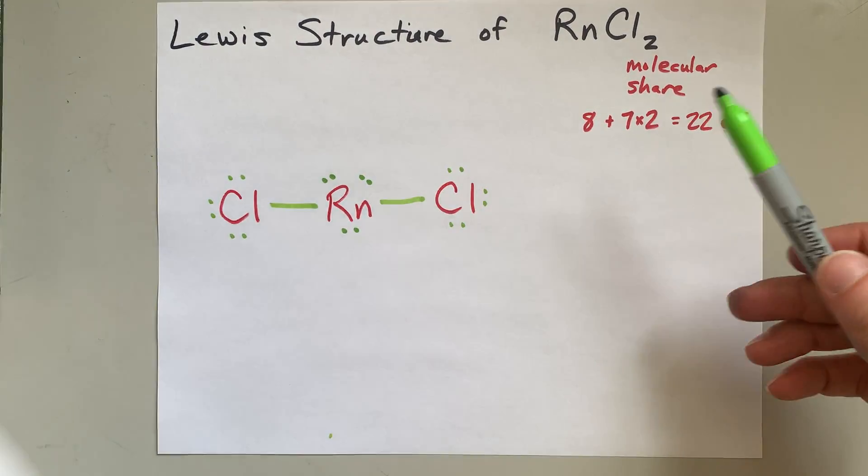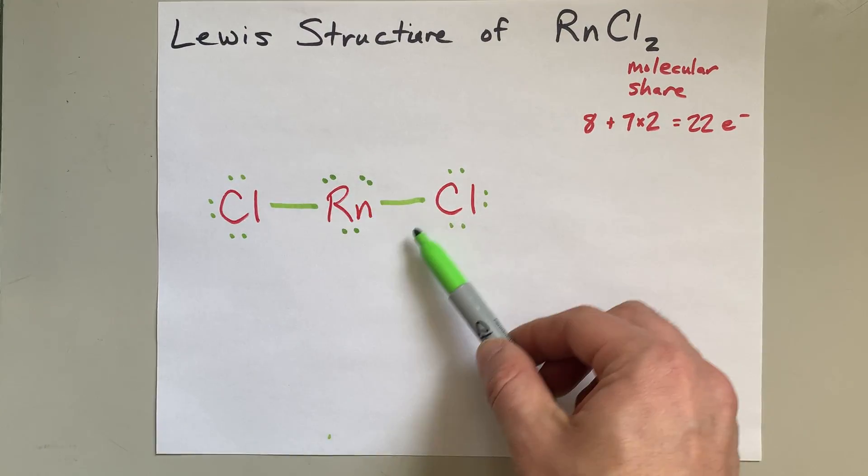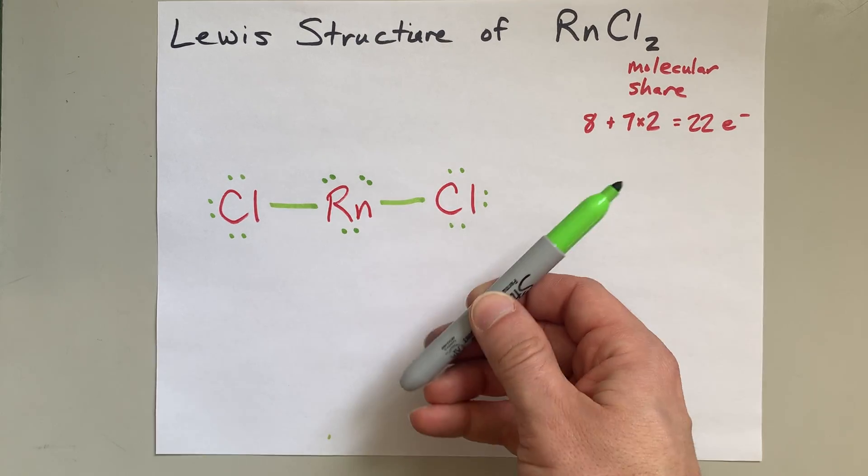Radon is deep enough into the periodic table that it can have an expanded octet. And so for radon to have 10 electrons around it is allowed.